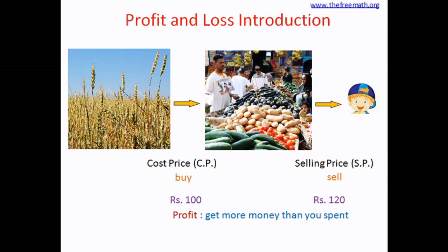So what is profit? Profit is when you get more money than you spent. In this case, the shop owner buys the vegetables for 100 rupees and sells them for 120 rupees — he sold for more than he spent. He got 20 rupees more. When you get more money than you spend, you have a profit.